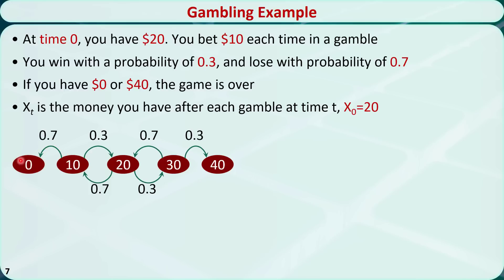If you have $0, the game is over and you will be trapped in this state with a probability of 100%. Similarly, if you have $40, the game is also over and you will be trapped in this state with a probability of 100%.